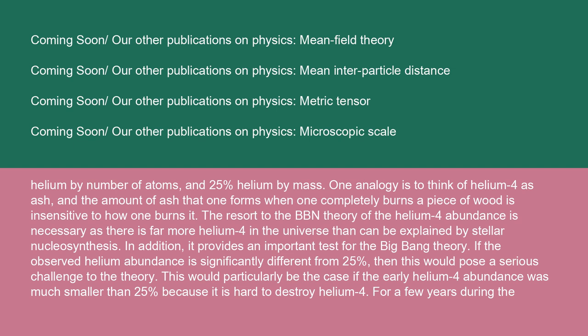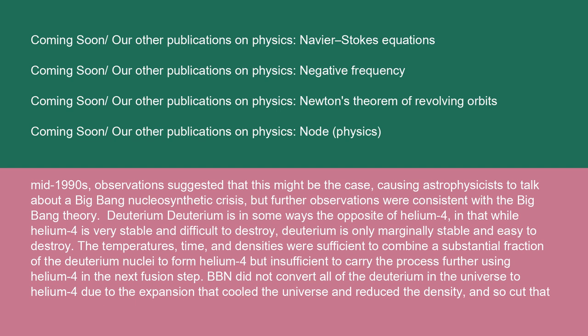One analogy is to think of helium-4 as ash, and the amount of ash that one forms when one completely burns a piece of wood is insensitive to how one burns it. The resort to the BBN theory of the helium-4 abundance is necessary as there is far more helium-4 in the universe than can be explained by stellar nucleosynthesis. In addition, it provides an important test for the Big Bang theory. If the observed helium abundance is significantly different from 25%, then this would pose a serious challenge to the theory. This would particularly be the case if the early helium-4 abundance was much smaller than 25% because it is hard to destroy helium-4. For a few years, during the mid-1990s, observations suggested that this might be the case, causing astrophysicists to talk about a Big Bang nucleosynthetic crisis, but further observations were consistent with the Big Bang theory.